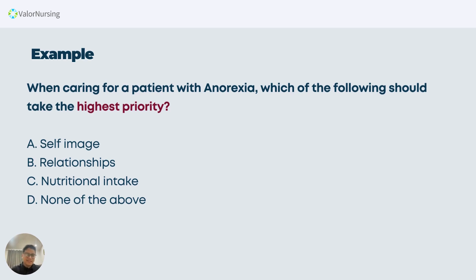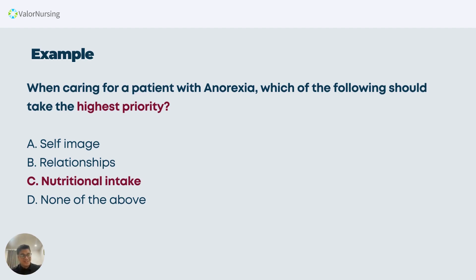The best answer is letter C, nutritional intake. Why? Because nutritional intake includes food, water, and air — all physiological needs. It may also include balanced living as part of nutrition and well-being as a whole concept. That's basically how you use Maslow's Hierarchy of Needs for prioritization-type questions. If it's not a prioritization question, we'll be using another model in future sessions.